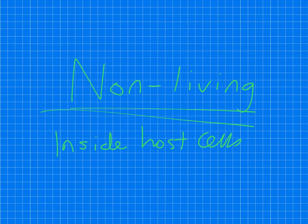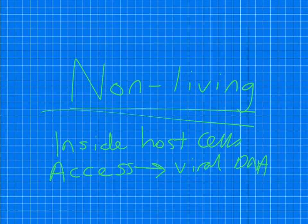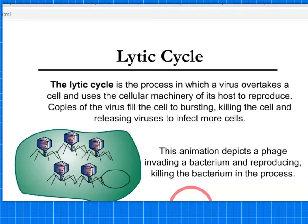It's quite sneaky in terms of its general strategy: it gains access into the cell, injects its viral DNA into the host cell, and takes over. It takes over the cell to produce more of the virus, and then it eventually bursts out, destroying the host cell. This is what we call the lytic cycle — the process by which a virus overtakes a cell and uses the cellular machinery of its host to reproduce. Copies of the virus fill the cell, burst out, destroy the cell, and are released to infect more cells.